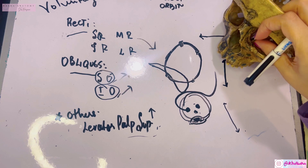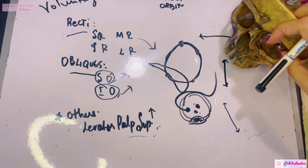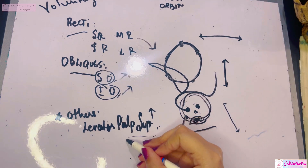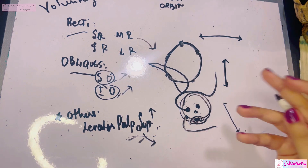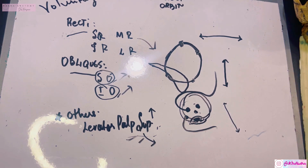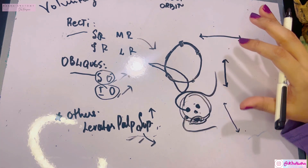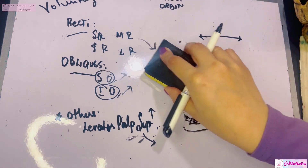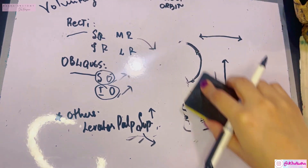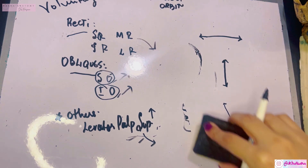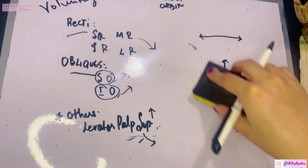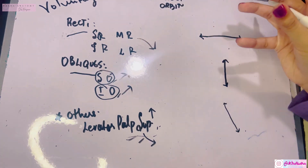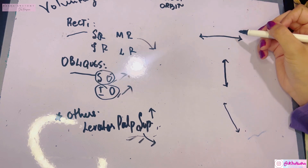The inferior oblique comes from the medial side at the anterior margin of the orbit, also runs laterally, and inserts into the sclera. The levator palpebrae superioris inserts into the upper eyelid. These are the basic origins and insertions of all the orbital muscles.